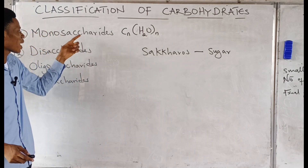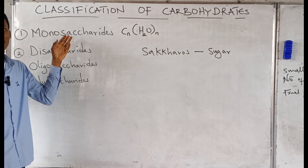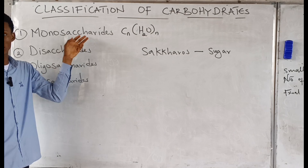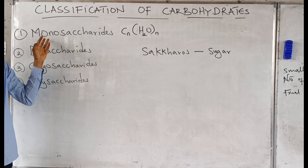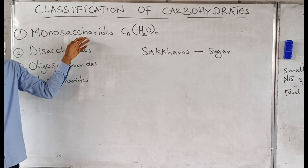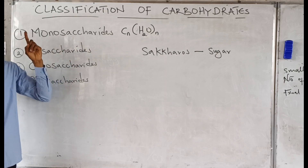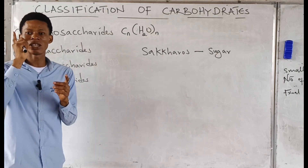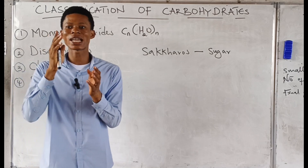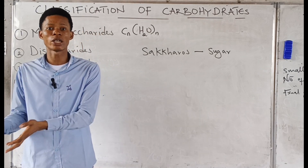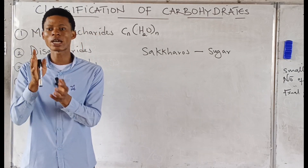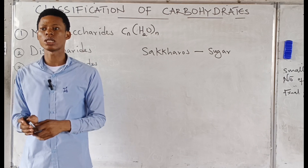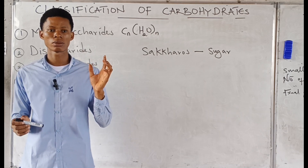Now monosaccharide — we already know that saccharide is talking about sugar. Mono means one. So monosaccharides are carbohydrates with one sugar unit. If they have one sugar unit, it means they cannot be broken down to simpler units. That's monosaccharide.